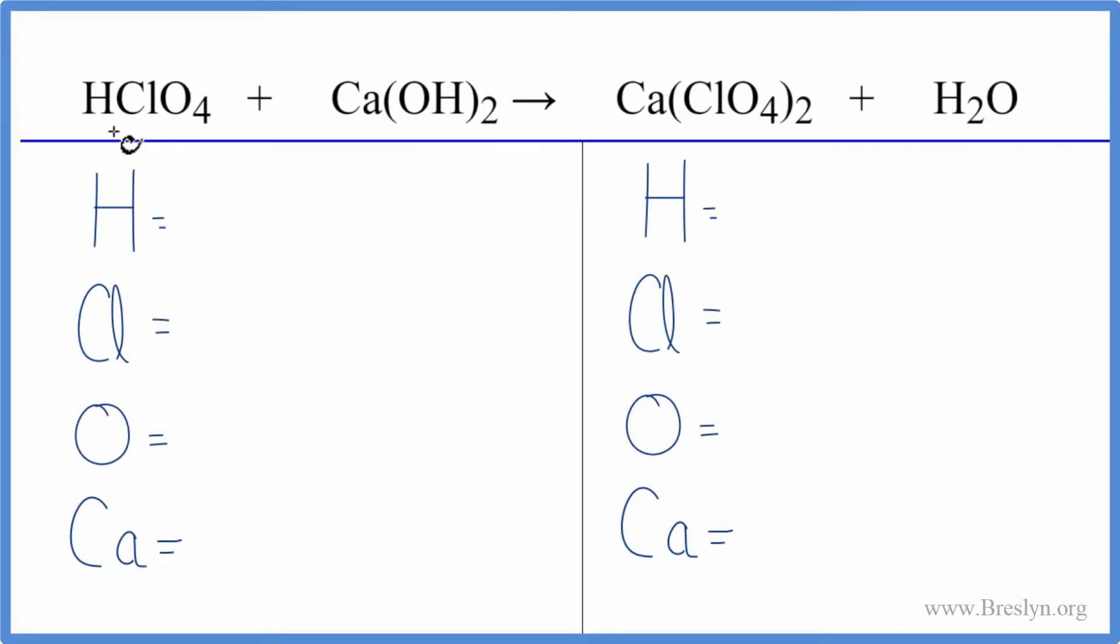In this neutralization reaction, we have perchloric acid plus calcium hydroxide. Let's balance the equation by counting up the atoms first.